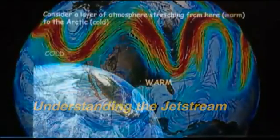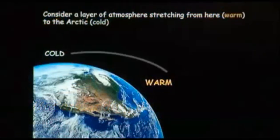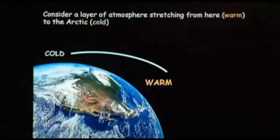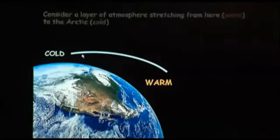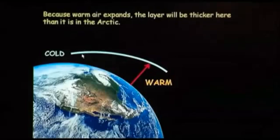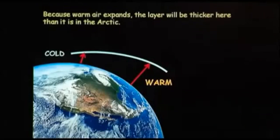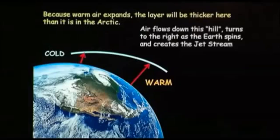If we consider a layer of atmosphere — say, the bottom 500 millibars — stretching from Colorado up to the Arctic, this is illustrated here by the top of this layer from Colorado, where it's much warmer, up to the Arctic. We know that warmer air takes up more vertical space than colder air, and this leaves us with a slope — a surface at the top of this layer of atmosphere that has a hill.